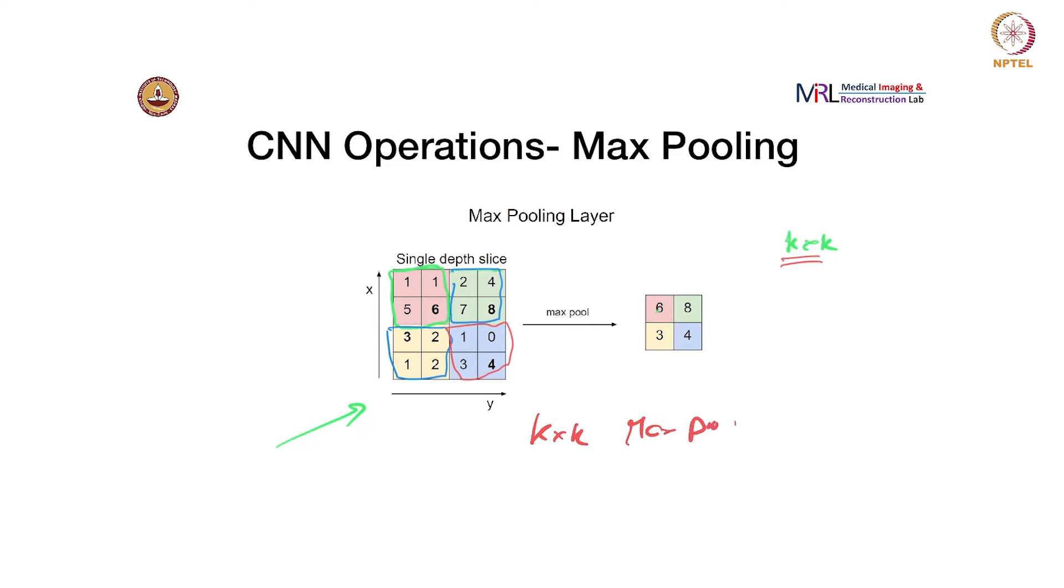Which basically means that you look at a k cross k neighborhood and find the maximum value in that neighborhood. You can also do that with a stride. In this case, it is done with a stride of 2, which is how you get the reduction in the subsampling effect, reduction in the size of the feature map. You can also do it with a stride of one where you would not get as much of a drop in the resolution, but you have some other purpose.